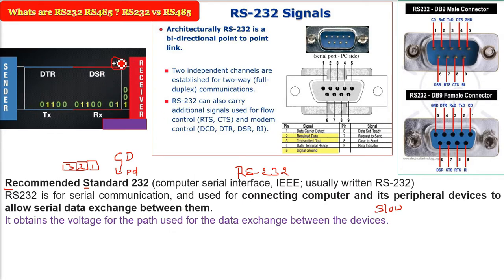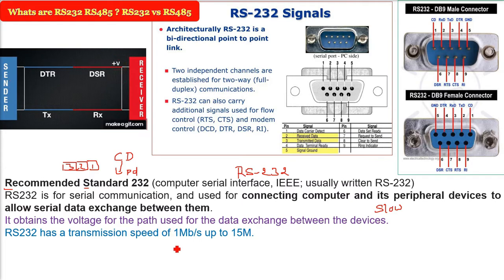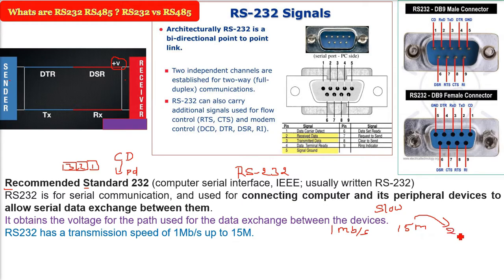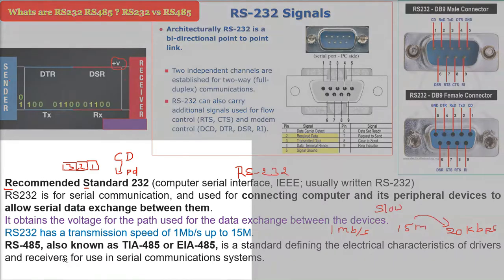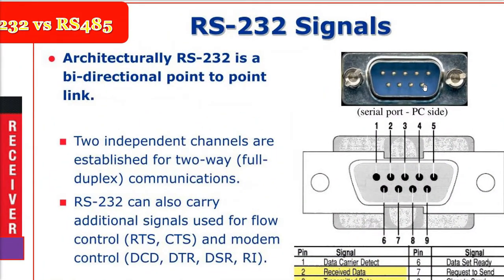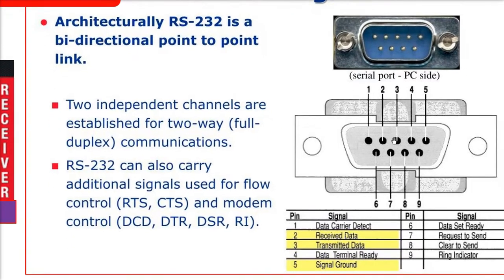RS-232 obtains the voltage for the path used for data exchange between devices. It has a transmission speed of 1 Mbps up to 15 meters, that is 50 feet. After 15 meters, the speed will be around 19.2 to 20 kbps. Architecturally, RS-232 is a bidirectional point-to-point link.